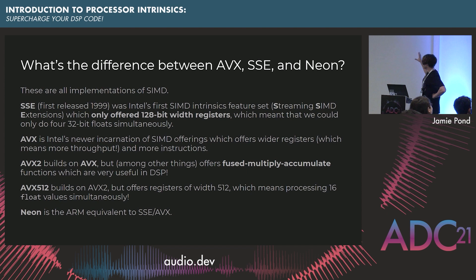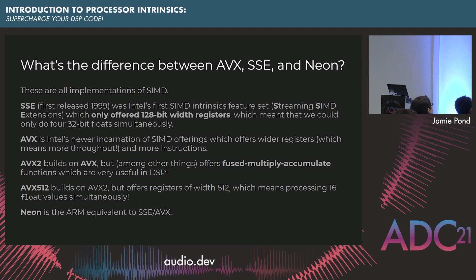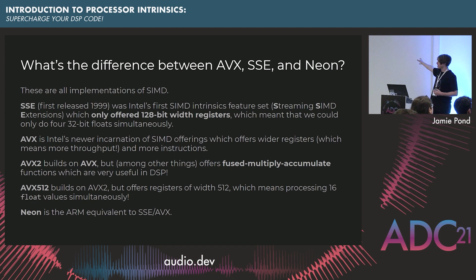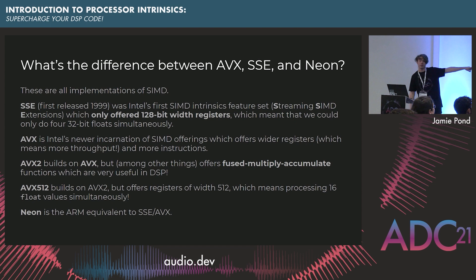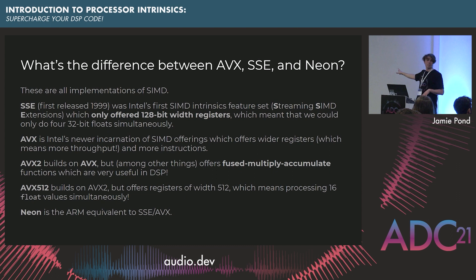Different processes will have different specific implementations of SIMD. Most Intel processors will have either SSE, AVX, AVX2, or AVX512. SSE was older technology from around 1999, with smaller registers. AVX came out in 2009. AVX2 is very similar but offers a few more features like the fused multiply accumulate, which is what we're going to be using today. We're going to be using AVX2 specific stuff today, but it's also possible to write something similar with just normal AVX. This is going to be specific to Intel processors with AVX2.